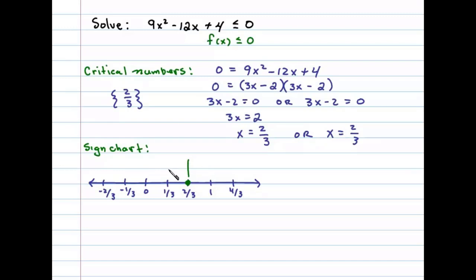Let's begin with x equals 1. In this case, f(1) will be equal to 9 times 1² - 12 times 1 + 4, or 9 - 12 + 4, which equals negative 3 + 4, and that's going to be positive. In fact, any test value you choose in this region will yield positive results.